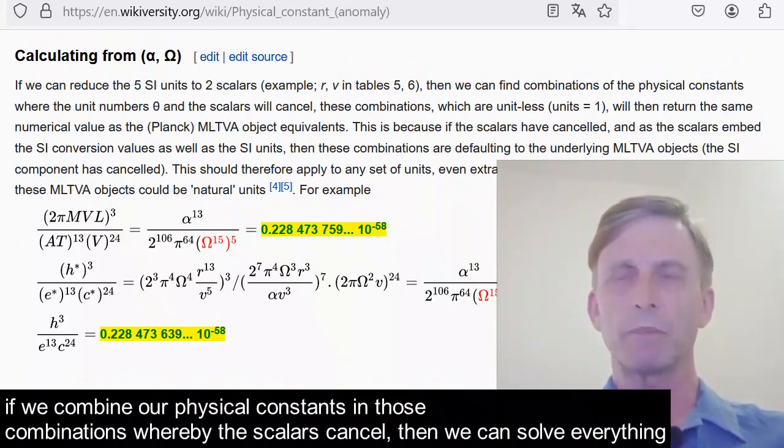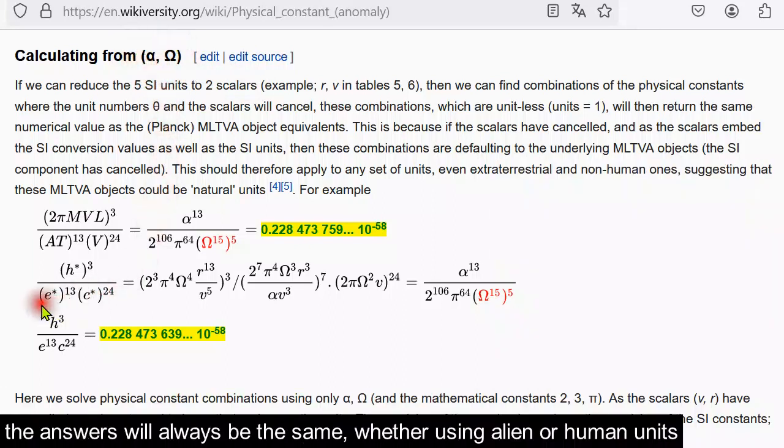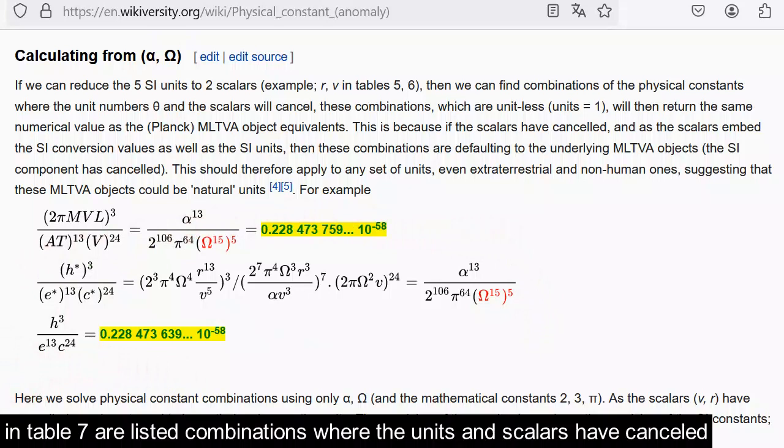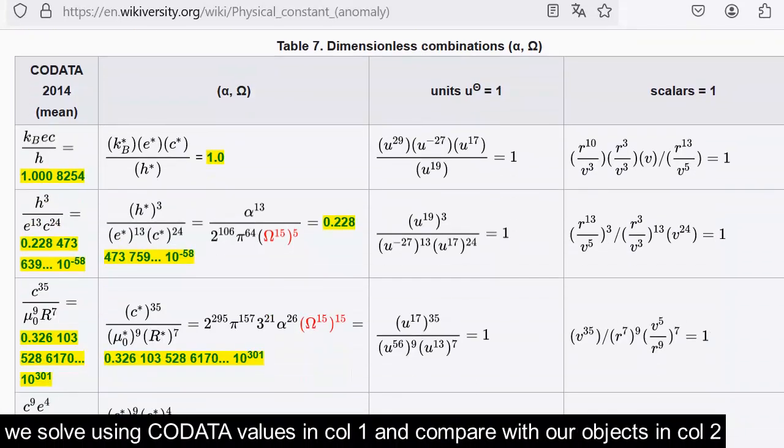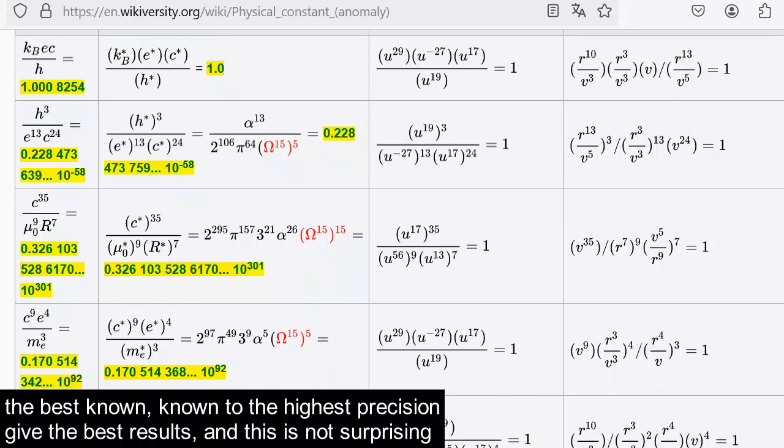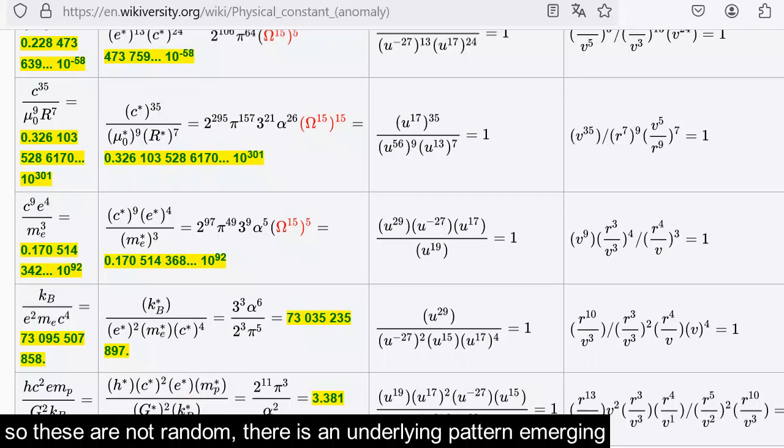But I can do even better. If we combine our physical constants in those combinations where the scalars cancel, then we can solve everything and we are only using those two fixed constants, alpha and omega, because the scalars have gone. And this will work for any system of units. The answers will always be the same, whether using alien or human units, and this is also a good test of our geometrical Planck units. In table seven are listed combinations where the units and scalars have cancelled. We solve using CODATA values in column one and compare with our objects in column two. The least known constants give the worst results. The best known, known to the highest precision, give the best results, and this is not surprising. We note also the appearance of a geometrical base 15 for all dimensionless combinations, so these are not random. There is an underlying pattern emerging.